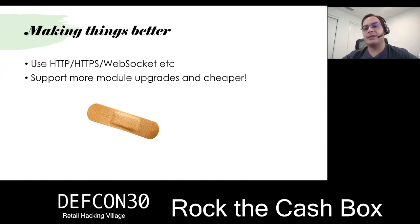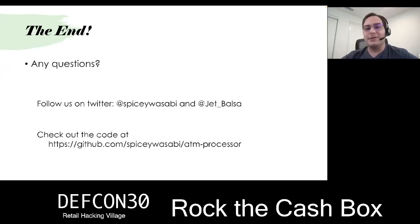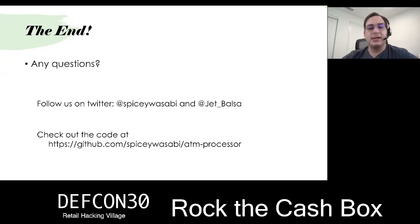I'm happy to answer questions. I'll be wandering around the village. You can find both of us on Twitter. You can download the ATM processor firmware yourself — it uses OpenWrt Image Builder to build a custom image. All the code is based in Python, so you can get that working. It has the web interface, and you can go from there if you happen to have the specific ATM or series of ATMs. If there are any questions, feel free to ask me, and if not, contact us. Thank you.